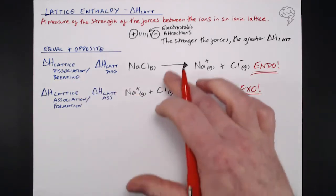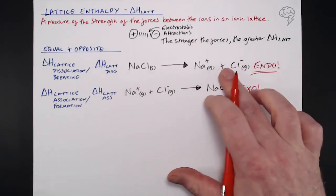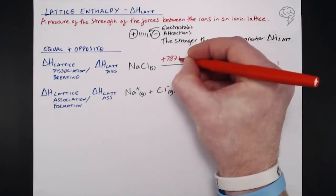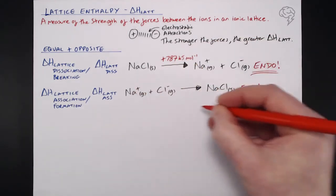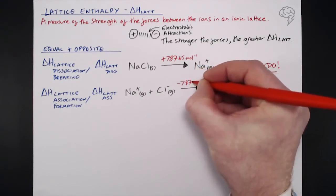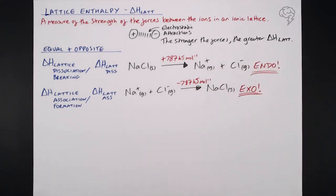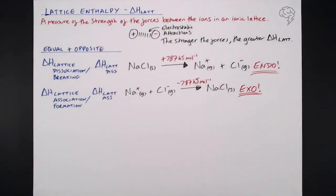For example, equal and opposite as I said, this lattice dissociation requires an input of 787 kilojoules per mole for sodium chloride. When sodium chloride forms from its gaseous ions, that's minus 787 kilojoules per mole. So the equal and opposite, like we've come to expect for Delta H. So that's just for sodium chloride. These terms you can use for any salt, but these are our values for sodium chloride.